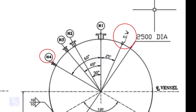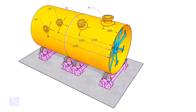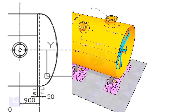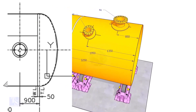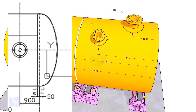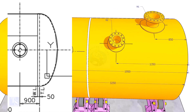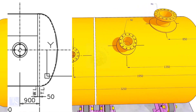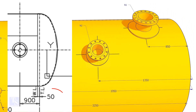Nozzle N1 is rotated 25 degrees from LSW. As the straight face of 50mm is on the dish end, we need to subtract 50mm from the overall dimension.